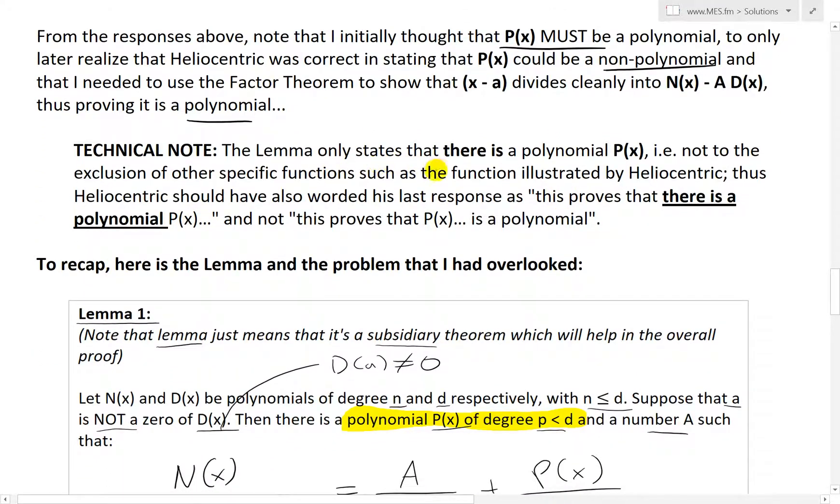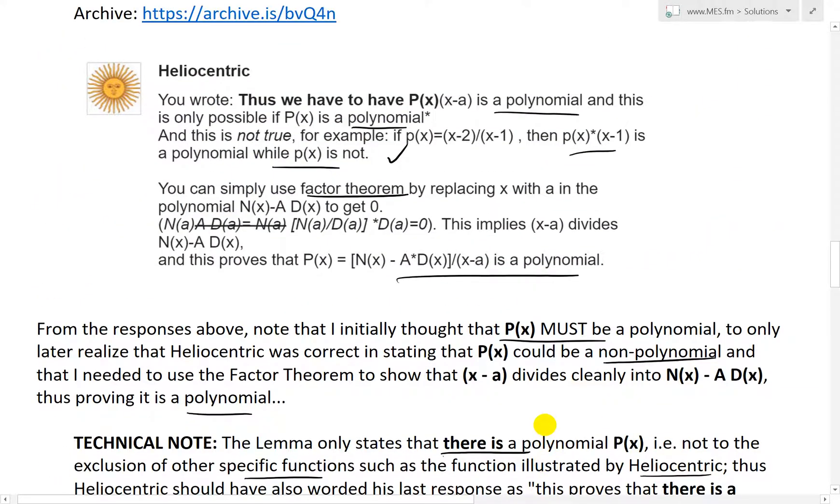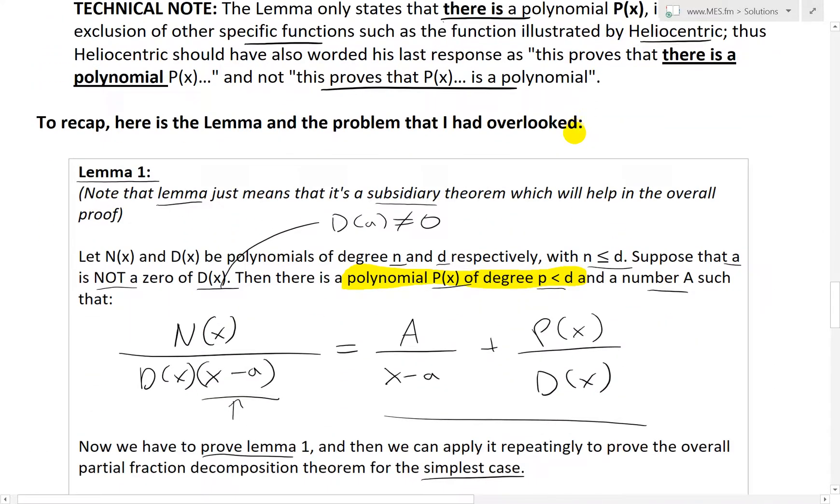Also, technical note, the lemma only states that there is a polynomial P(x), not to the exclusion of other specific functions such as the function illustrated by Heliocentric. Thus, Heliocentric should have also worded his last response as 'this proves that there is a polynomial P(x)' and not 'this proves that P(x) is a polynomial.' There is a polynomial because it can be, as he stated, something which is not a polynomial. That still works. But all we need to worry about is that there is one.